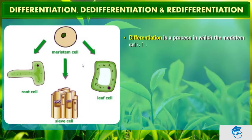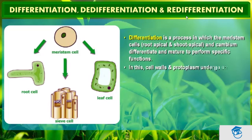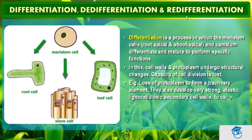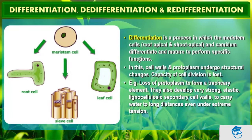Differentiation: the cells derived from root apical and shoot apical meristem and cambium differentiate and mature to perform specific functions — this is termed differentiation. During differentiation, cells undergo few to major structural changes both in their cell wall and protoplasm.